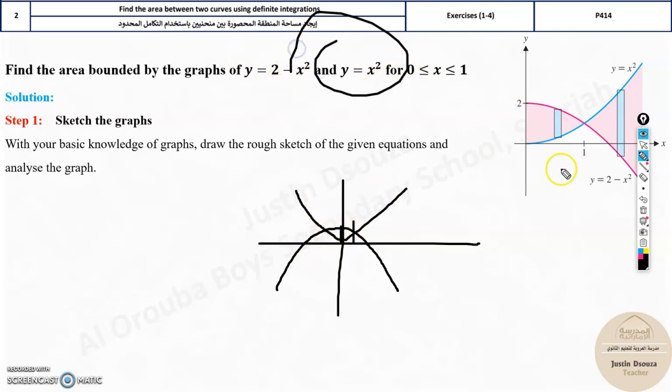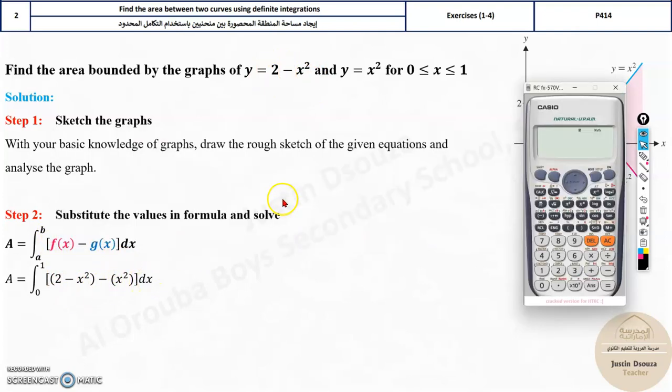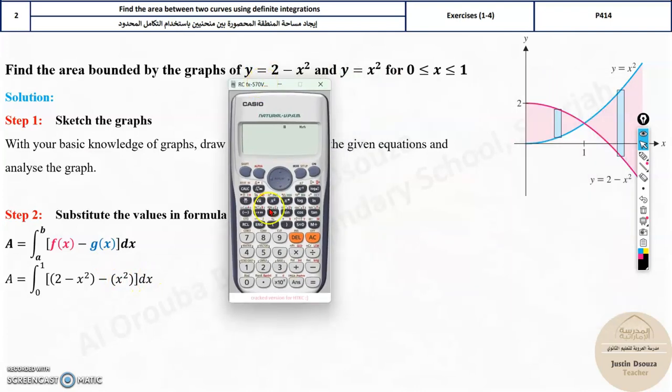It is x squared, and what is the, sorry, 2 minus x squared is the upper function, and what is the lower function? It is x squared lower. That's it. Now, if you know that, you can just substitute in the formula and solve. The formula is over here, f of x minus g of x dx. Put it over here, 2 minus x squared is the upper function, lower function. Put it in the calculator, and directly you will get the answer.